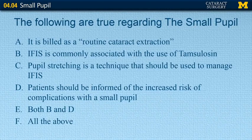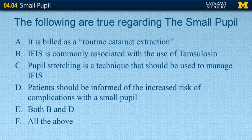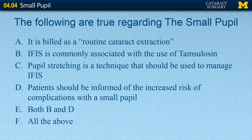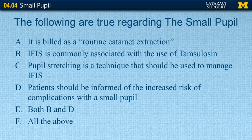The following are true regarding the small pupil: A, it is billed as a routine cataract extraction; B, IFIS is commonly associated with the use of tamsulosin; C, pupil stretching is a technique that should be used to manage IFIS; D, patients should be informed of the increased risk of complications with a small pupil; E, both B and D; F, all the above. The correct answer is E. Answer A is incorrect because small pupil is billed as complex cataract extraction. C is incorrect because stretching the pupil in IFIS will exacerbate the floppiness and make surgery more difficult.